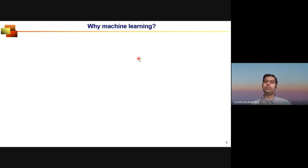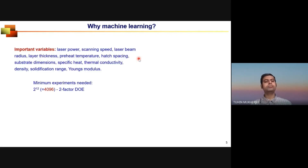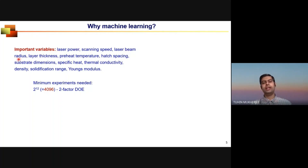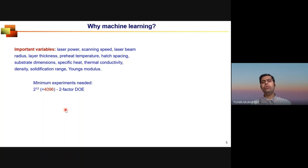Why machine learning? Consider a study of a defect that depends on 12 controllable variables — power, speed, laser beam radius, layer thickness, and so forth. Using a simple two-factor design of experiment, the minimum number of experiments needed is 2^12 = 4,096. Even if a PhD student runs one successful experiment per day, they cannot graduate in 10 years. That is not a viable route.